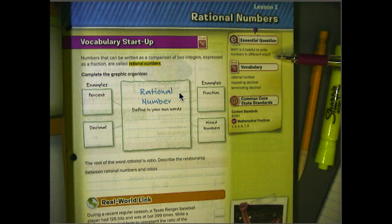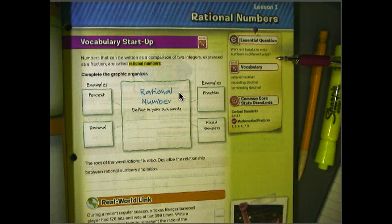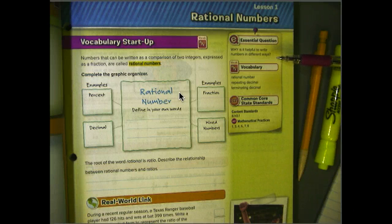And remember, there are several different ways to write numbers. We can write them as fractions, percents, decimals, many different ways. And we're going to be looking at the fraction, percent, and decimal in this particular section.